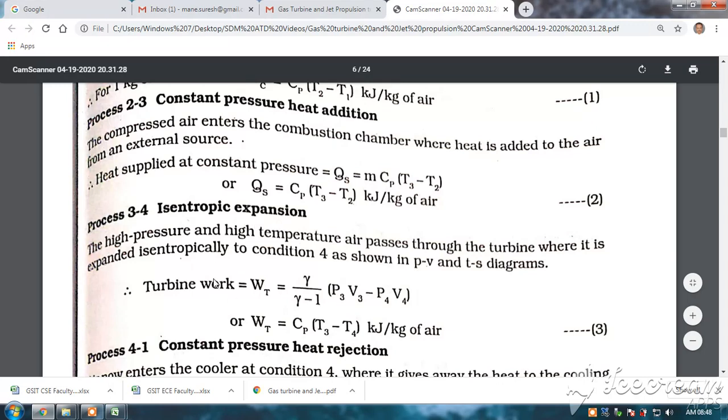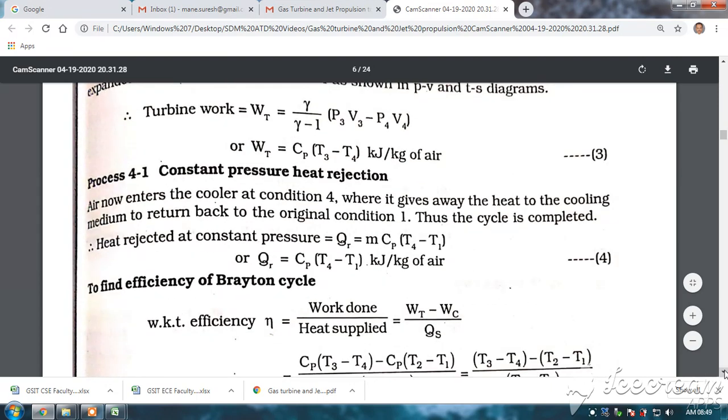Then, 3 to 4 is again isentropic turbine work, where the work is expanded. The steam is expanded in the turbine. This is isentropic. Work done is γ/(γ-1)·(P3V3-P4V4). That is, Cp·(T3-T4) per kg of air and 4 to 1 is constant pressure heat rejection. Again, this is Qr is equal to M·Cp·(T4-T1) or Qr is equal to Cp·(T4-T1).